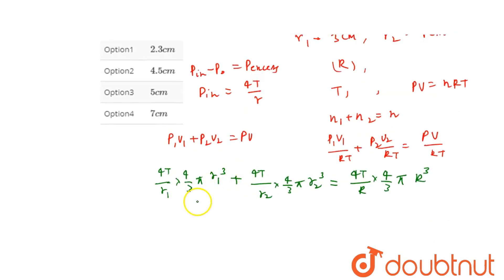On solving and cancelling the common terms, then we are going to get R1 square plus R2 square will be equals to capital R square.